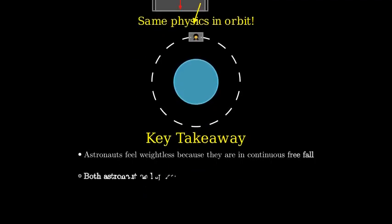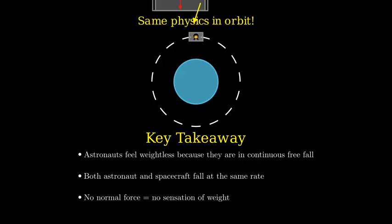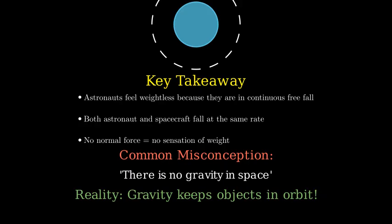To summarize, astronauts feel weightless because they and their spacecraft are in continuous free fall around Earth, eliminating any normal force that we normally interpret as weight. The common misconception is that there's no gravity in space. In reality, gravity is still very much present.